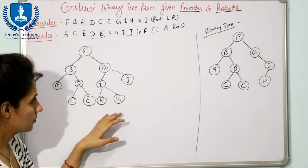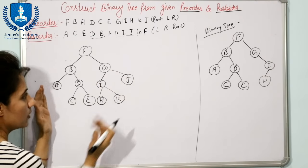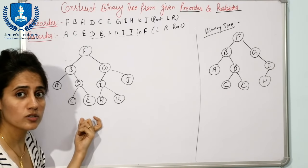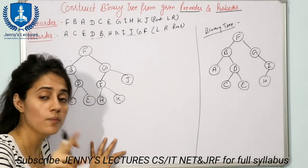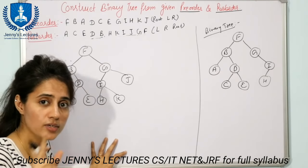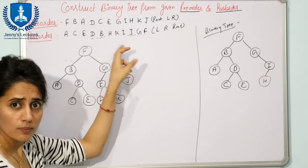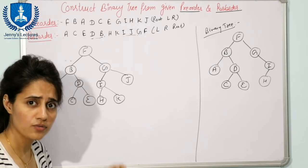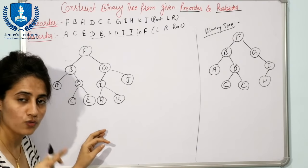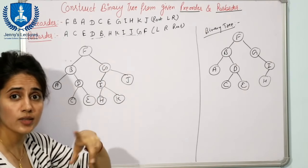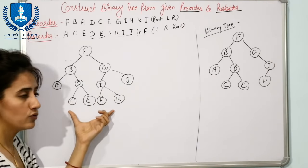This binary tree is the same as our original full binary tree. We made it a full binary tree by inserting J and K. Because it is a full binary tree, we are able to construct it uniquely. You can also apply the full method (not just the trick) and you will find the same answer. Try constructing it using both approaches and tell me in the comments whether you get the same binary tree.